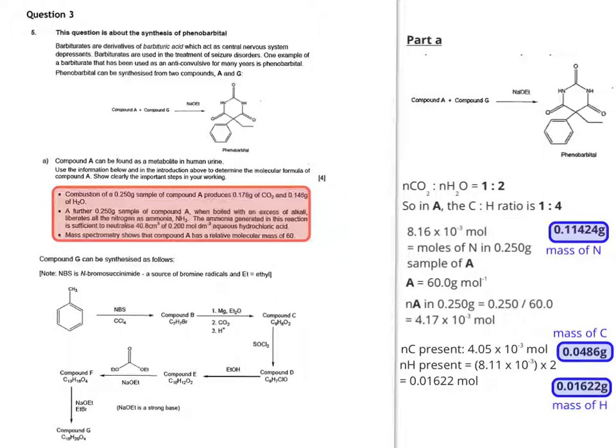If we start working out the number of moles of each individual element present from previous calculations and from information we've just worked out, we can see that that can be converted into mass. The one element we don't have is oxygen. Obviously our total amount is 0.250 grams. What we need to do is subtract the sum of all the masses that are highlighted, take that away from 0.250.